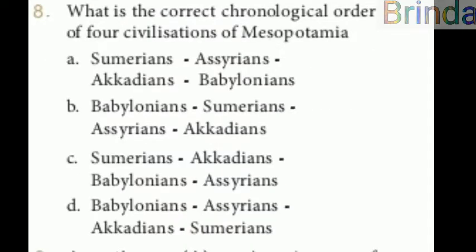Eighth question: what is the correct chronological order of four civilizations of Mesopotamia? The correct order is Sumerians, Akkadians, Babylonians, then Assyrians. You can easily remember it as S-A-B-A — Saba: Sumerians, Akkadians, Babylonians, Assyrians.